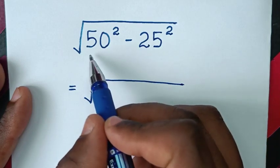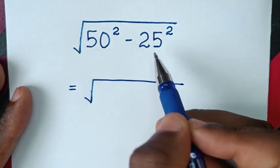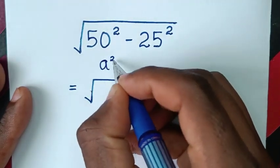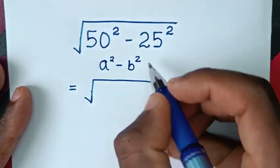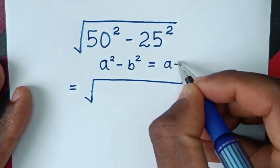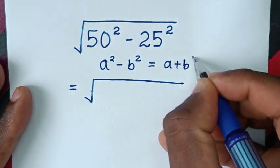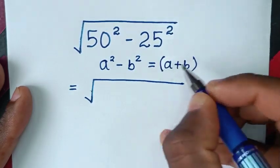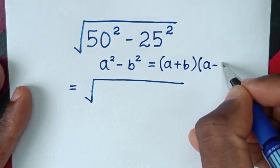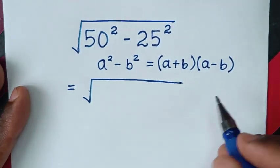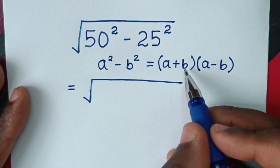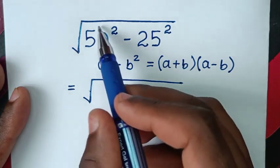So I will apply the perfect square rule, which is a squared minus b squared is equal to a plus b bracket times a minus b bracket. So I will apply this form.